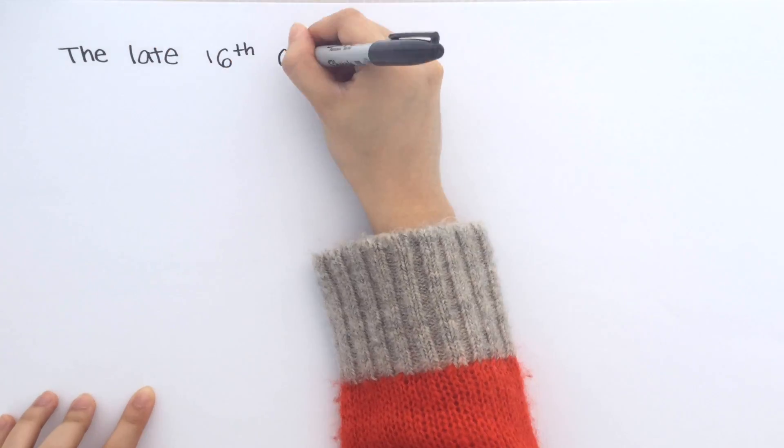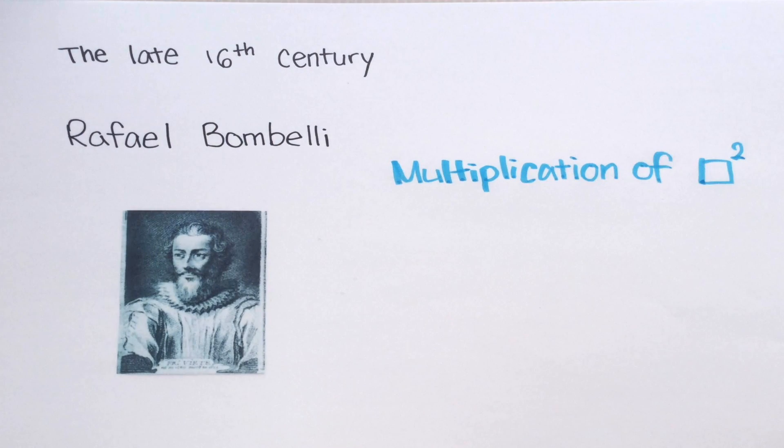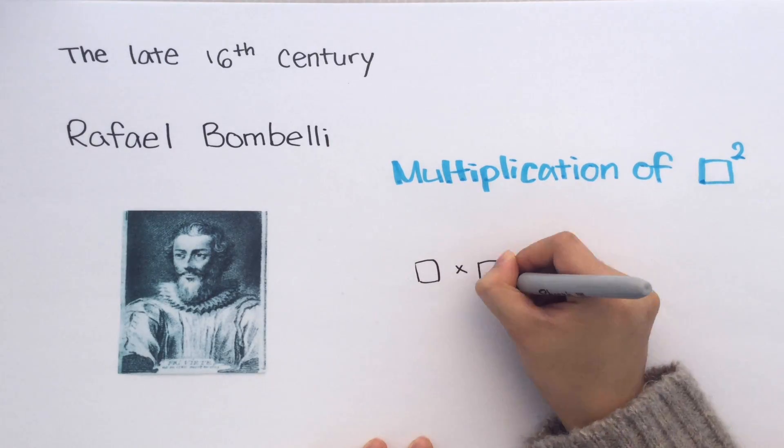In the late 16th century, Raphael Bambali introduced a type of multiplication where a number multiplied by itself could equal negative 1.